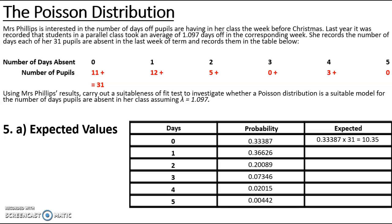The expected values are: just over 10 pupils with no days off, just over 11 with one day off, just over 6 with two days off, just over 2 with three days off, less than 1 with four days off, and less than 1 with five days off.